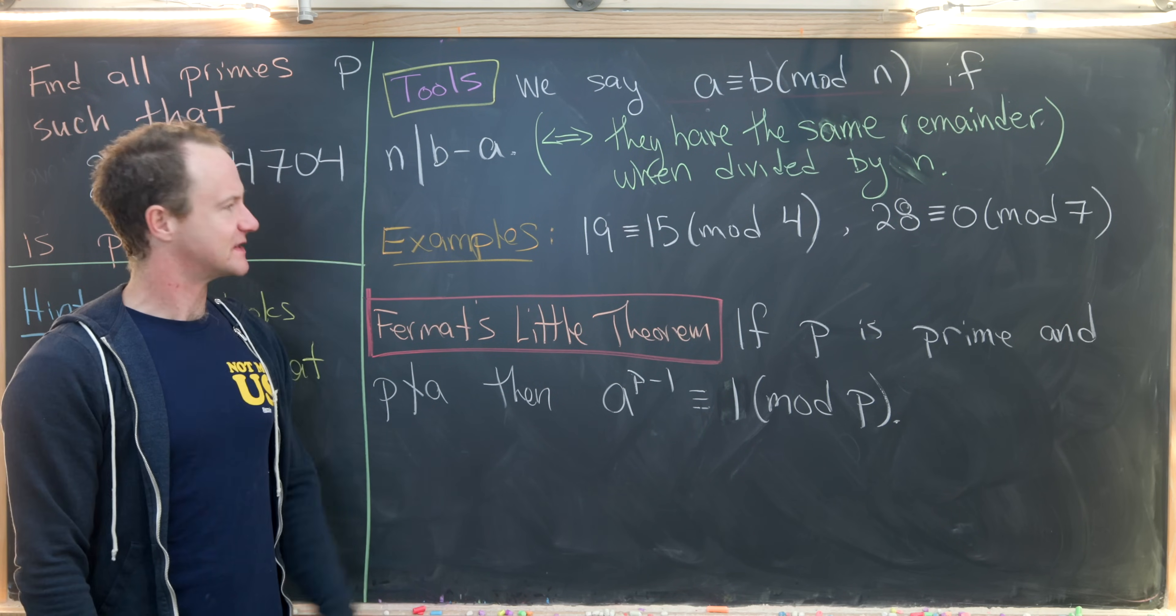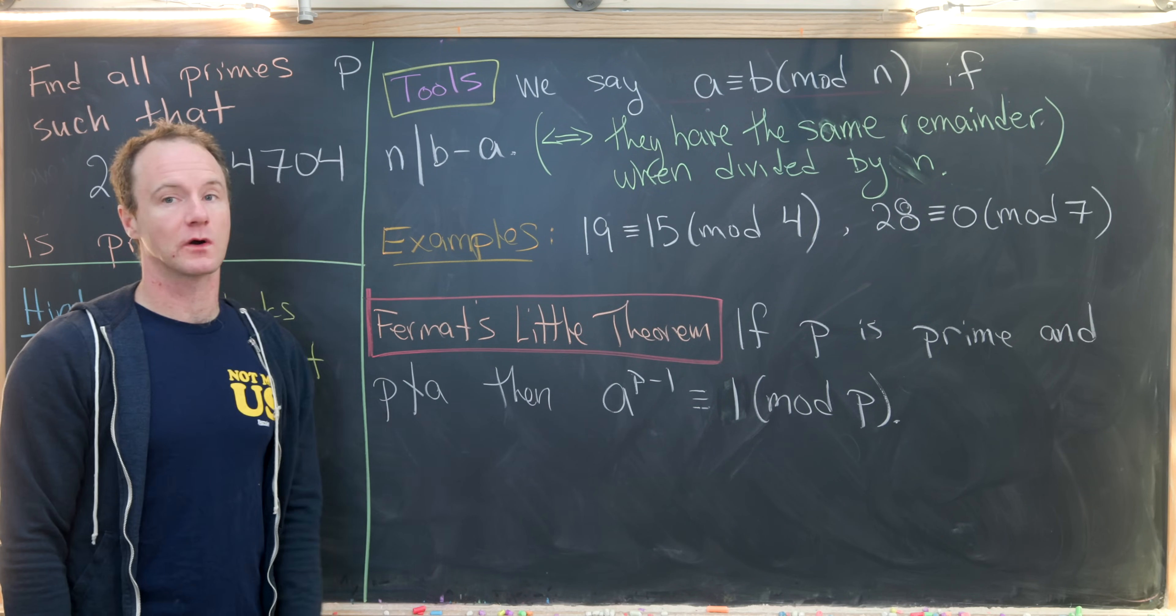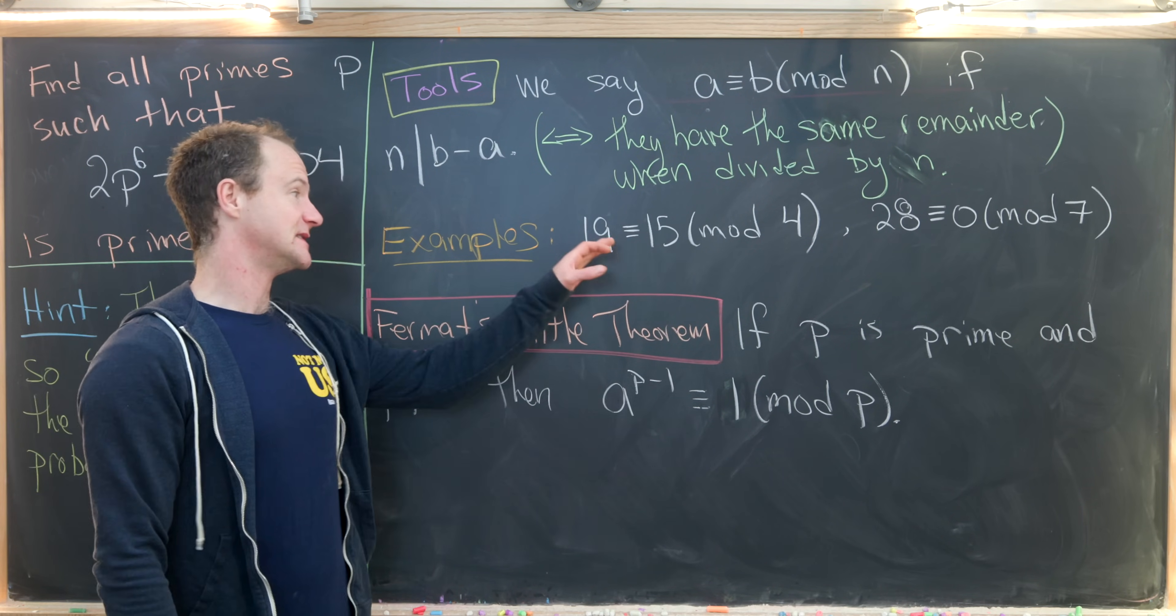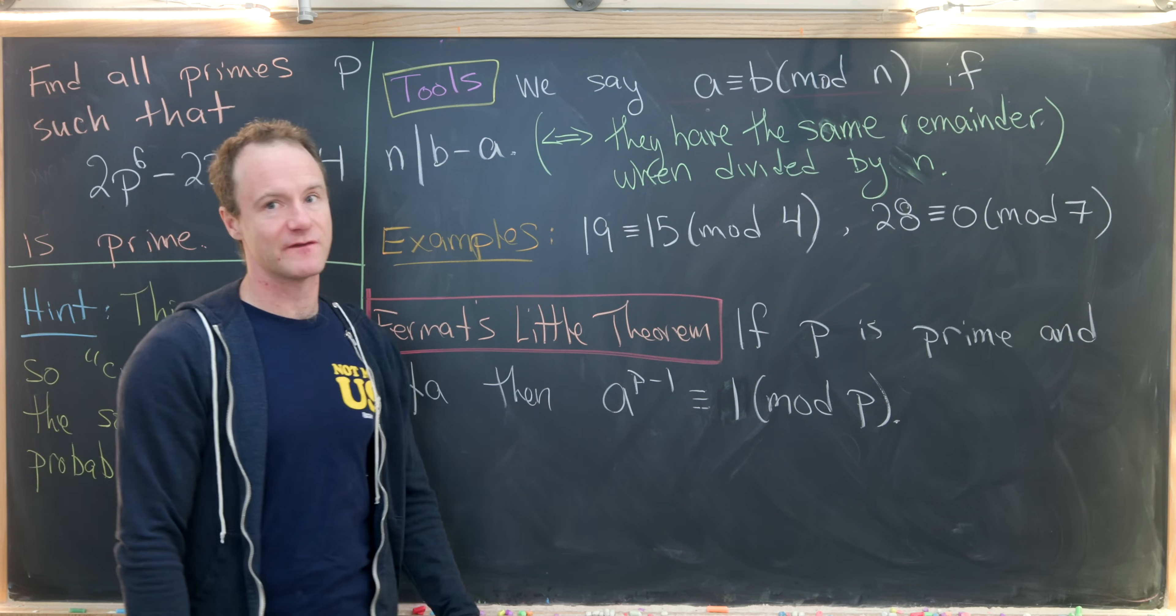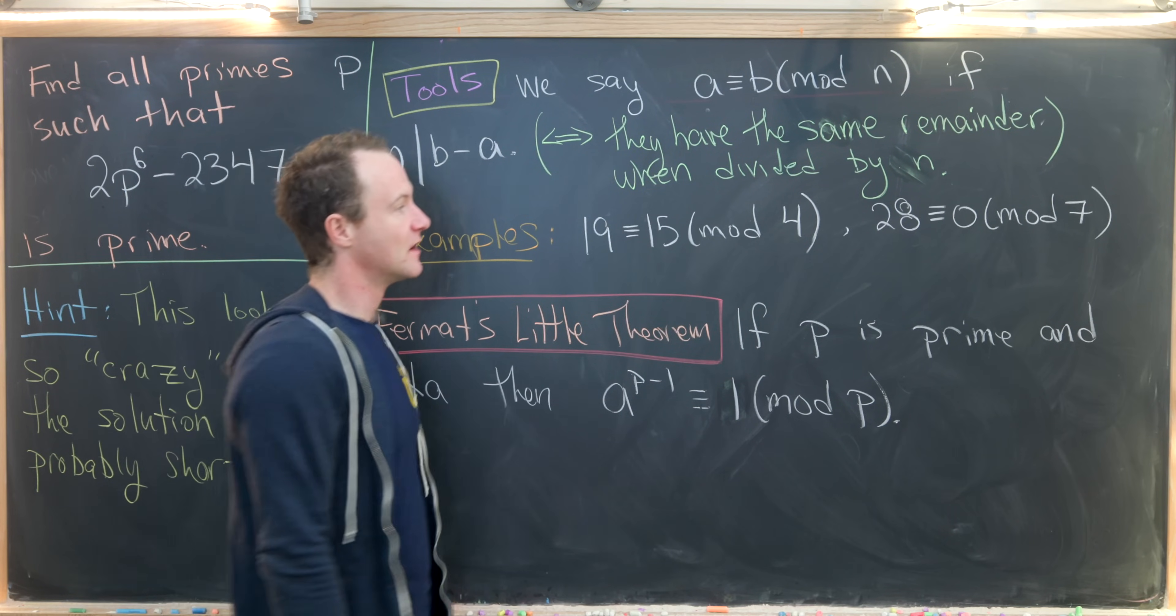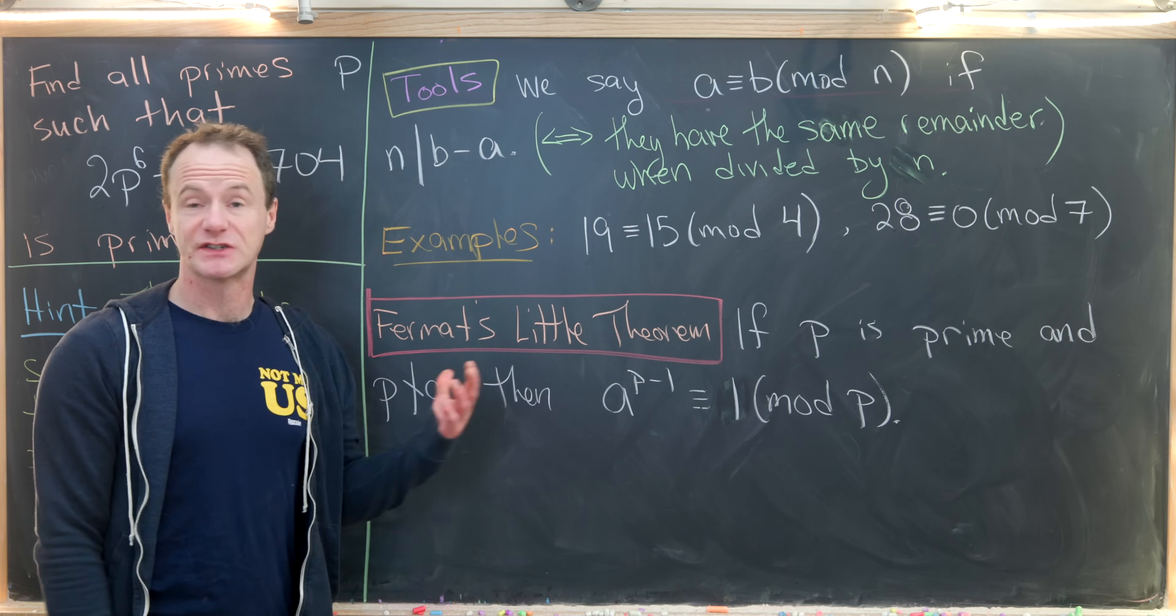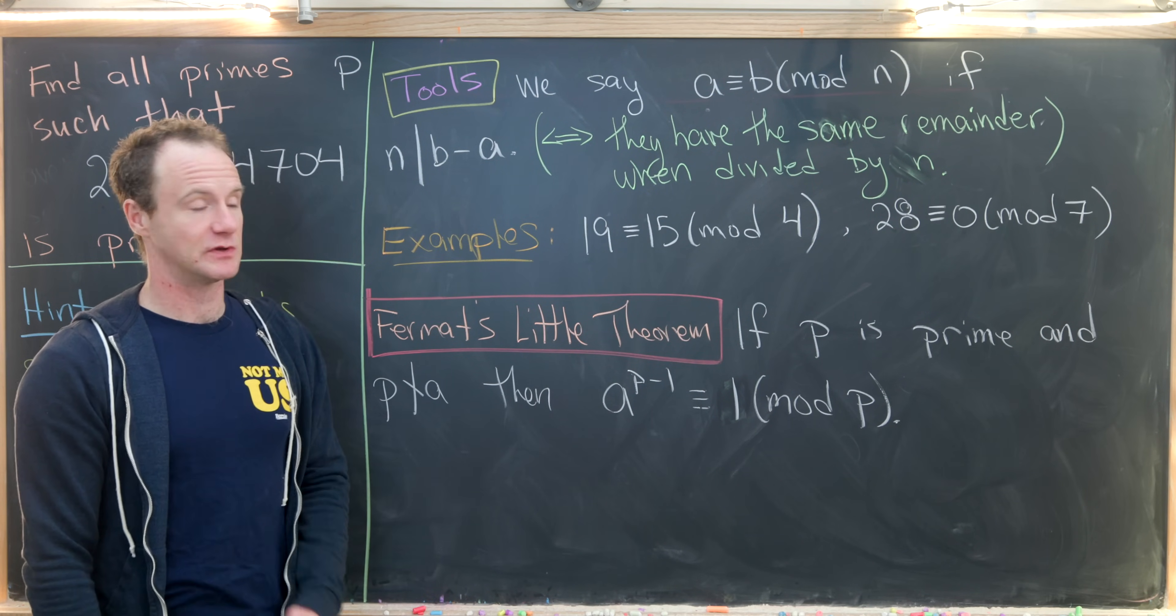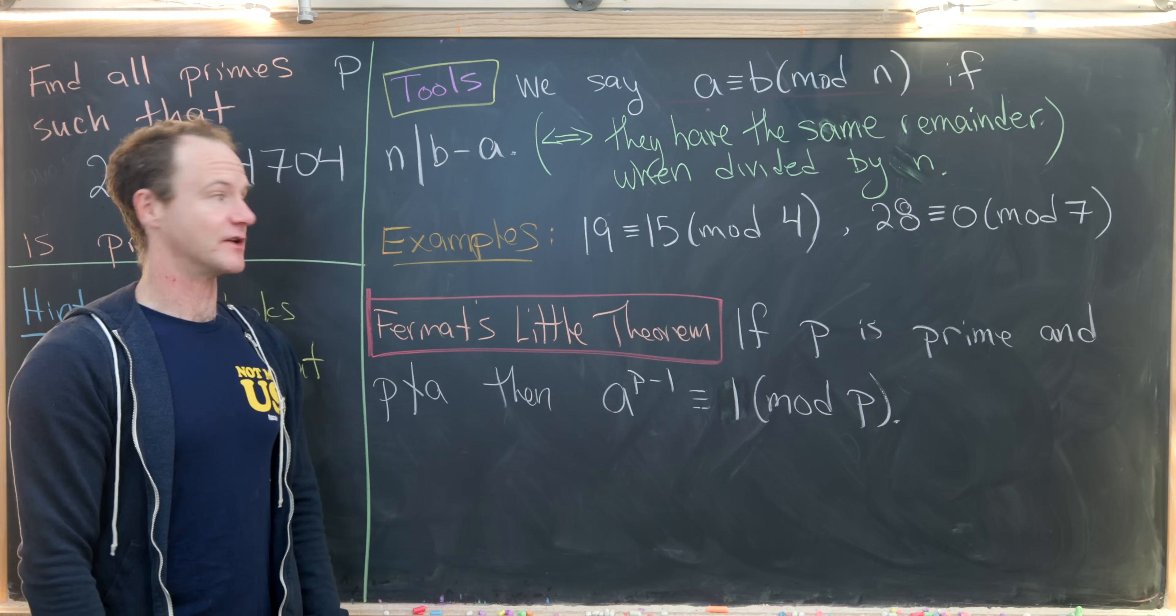So let's look at some examples. 19 is congruent to 15 mod 4. That's because 19 minus 15 is equal to 4. Or 19 divided by 4 gives us a remainder of 3 and so does 15. Furthermore, 28 is congruent to 0 mod 7 because 28 itself is a multiple of 7. Or in other words, if you divide it by 7, you get a remainder of 0.